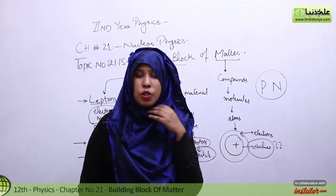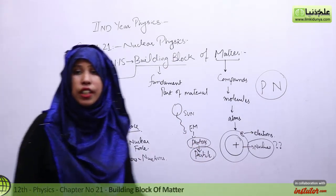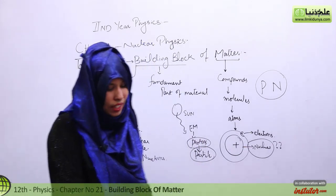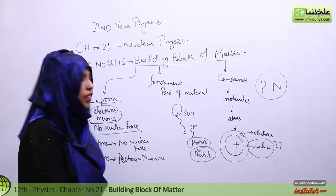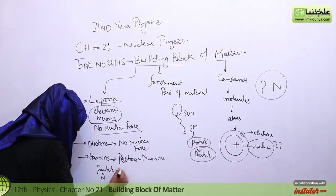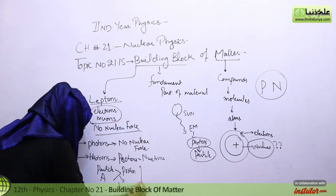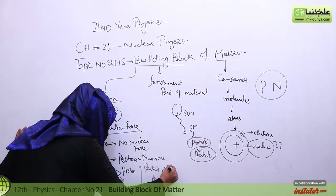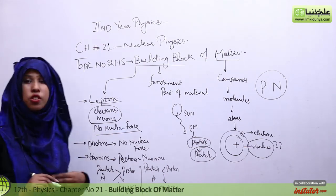Now there are some particles within the nucleus. Particles whose atomic mass is more than that of a proton are called baryons. And those particles whose atomic mass is less than a proton are called mesons.